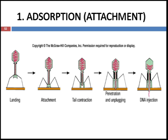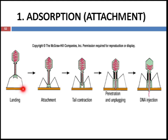During adsorption there is random collision with the bacteria or cell. The first stage is reversible when only the tail fibers are attached, but once the tail pins get attached, the attachment becomes irreversible.